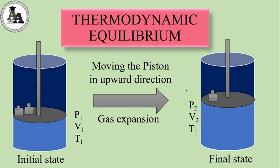So the system is in a thermodynamic equilibrium. Now what about the initial state? In the initial state, the piston is motionless, the pressure, volume, and temperature are specified — the state functions are defined. The piston is motionless, so the system is in a thermodynamic equilibrium state.